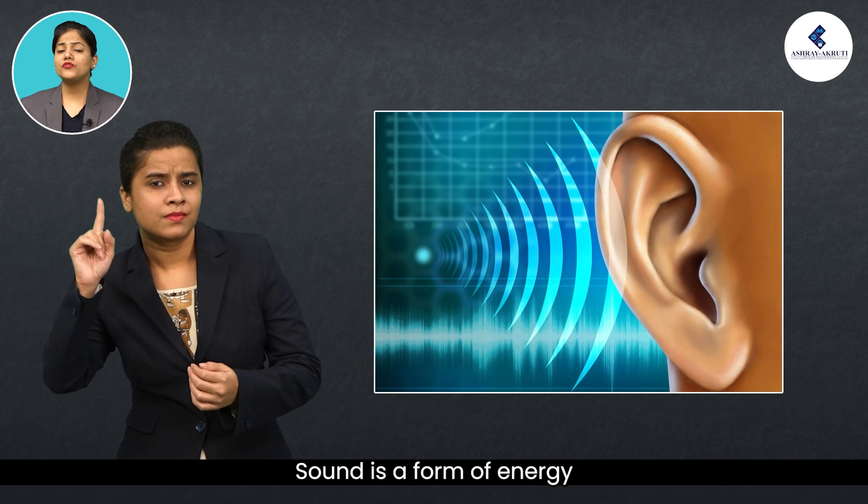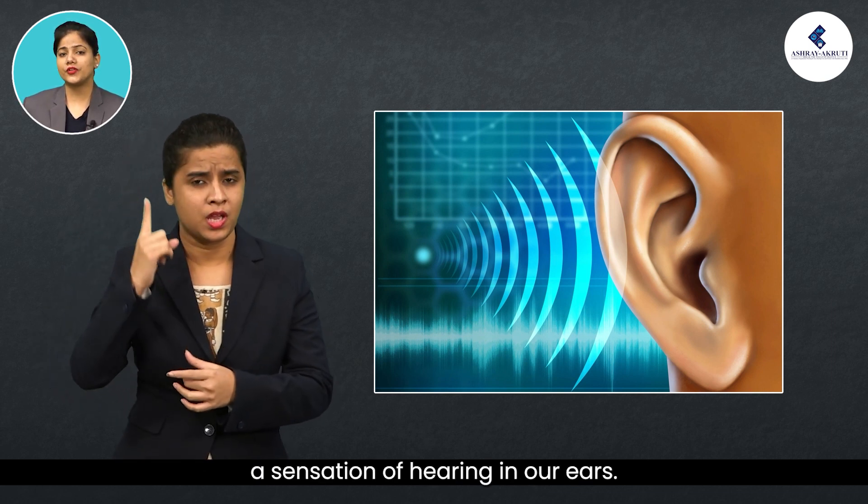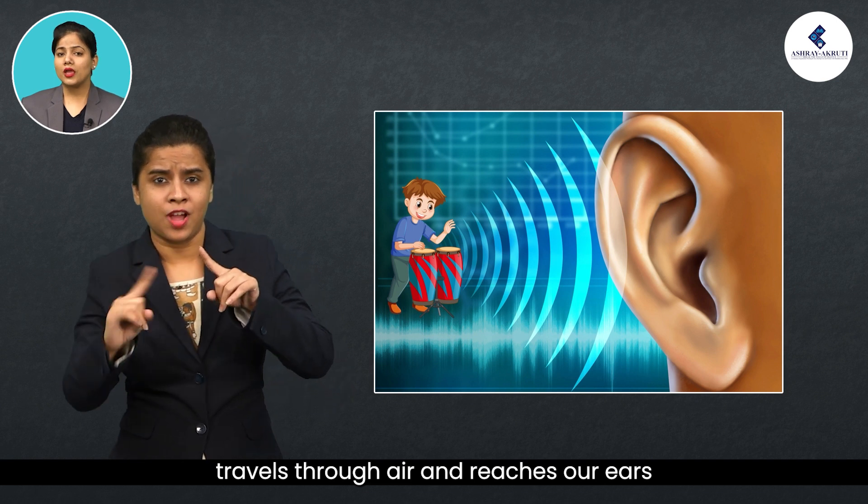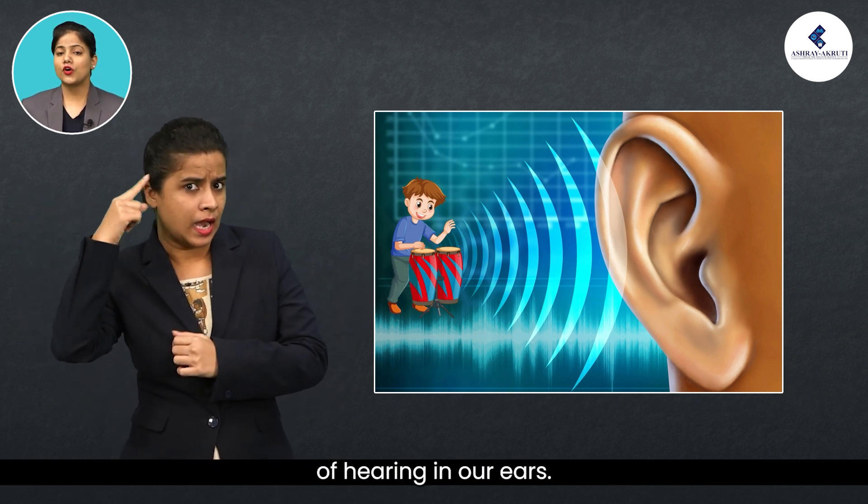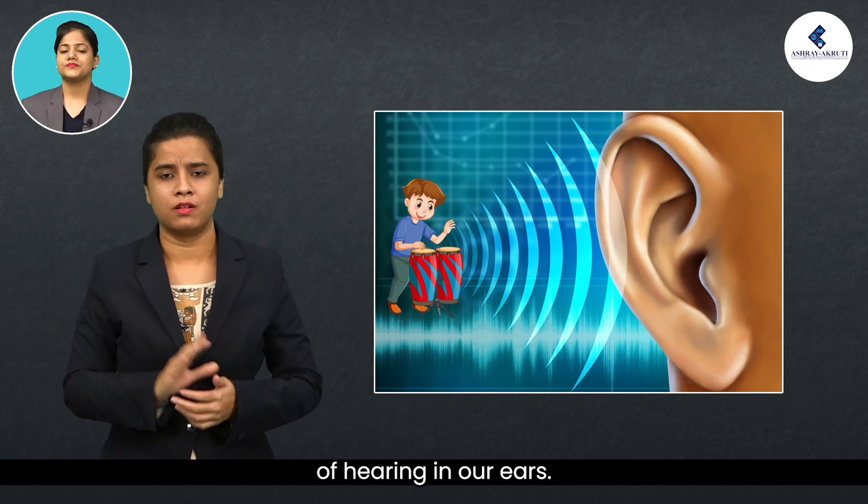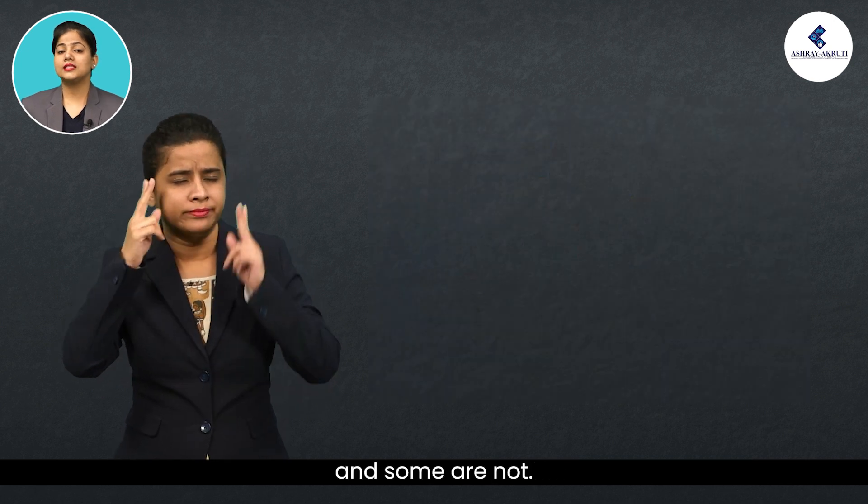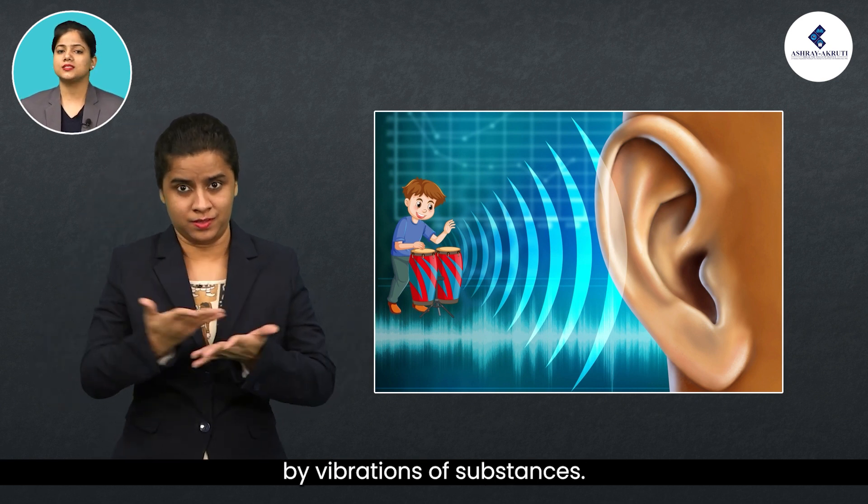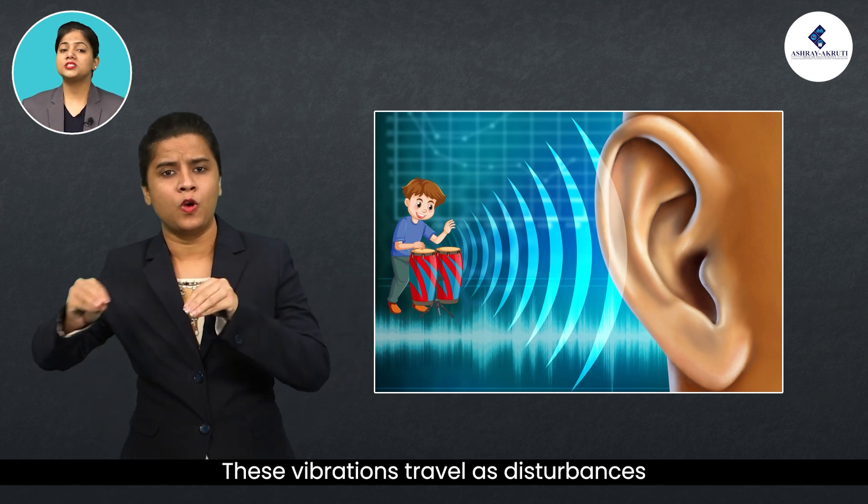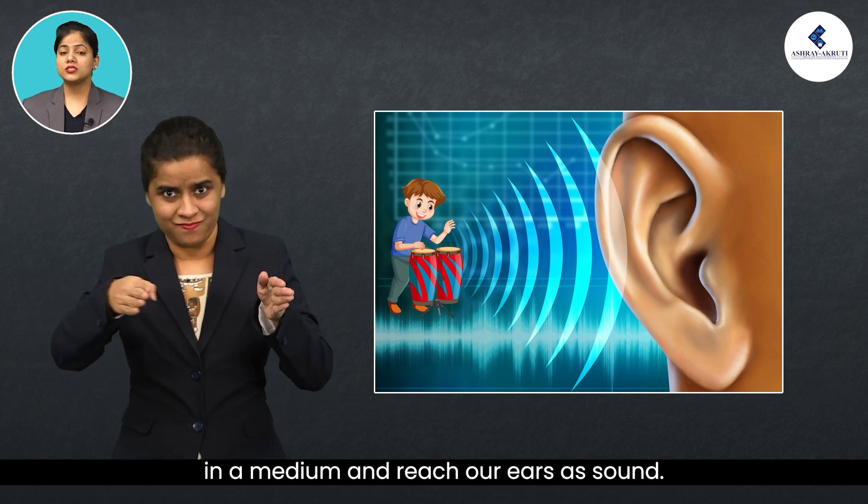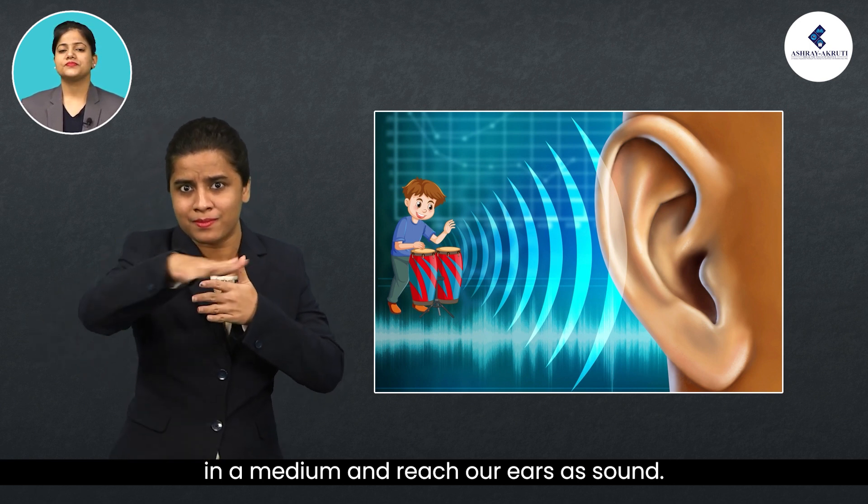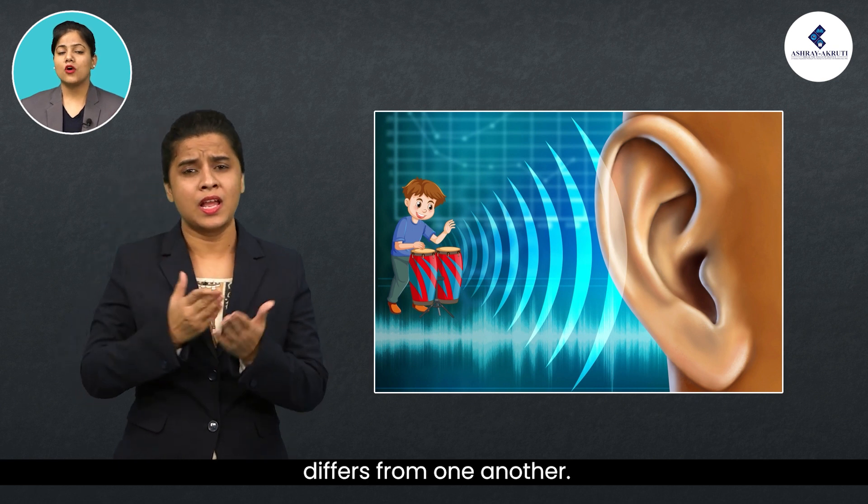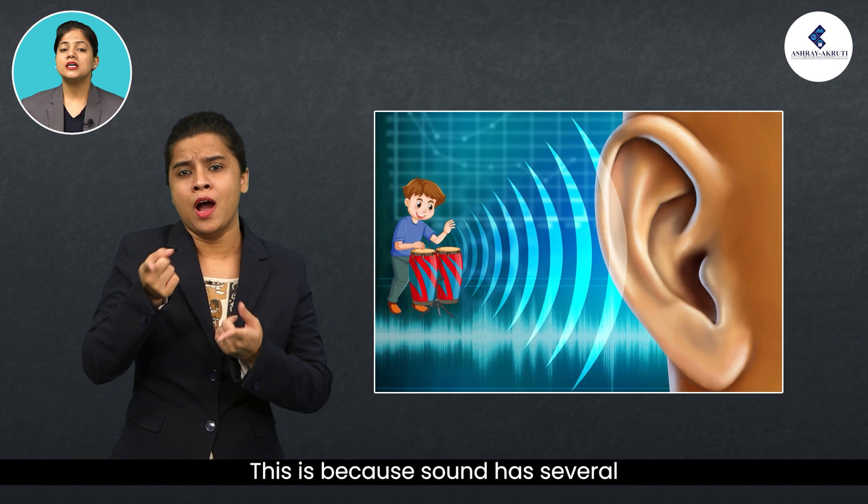Sound is a form of energy which produces a sensation of hearing in our ears. Sound produced at a distance travels through air and reaches our ears to produce a sensation of hearing. Some sounds are pleasant to hear and some are not, but all sounds are produced by vibration of substances. These vibrations travel as disturbances in a medium and reach our ears as sound. The quality of sound also differs from one another. This is because sound has several qualities.